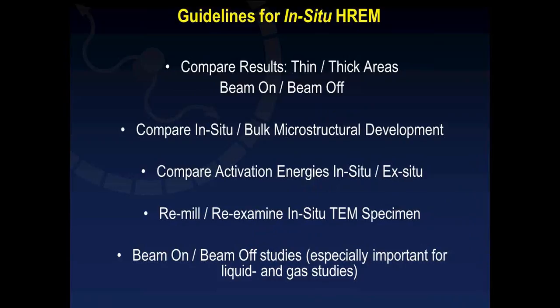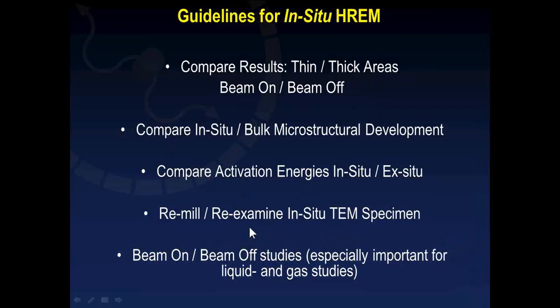Some guidelines developed for in situ TEM include: compare results from thin and thick areas of the sample; perform experiments with the electron beam on versus off to check for beam influence; compare in situ versus ex situ experiments by looking at bulk microstructure development and comparing activation energies. After in situ TEM experiments, you can re-ion mill the thin foil sample and re-examine new electron-transparent regions. The beam-on and beam-off studies are especially important for liquid and gas cell related studies.